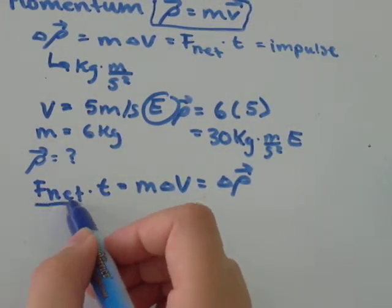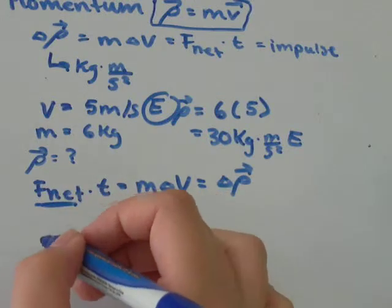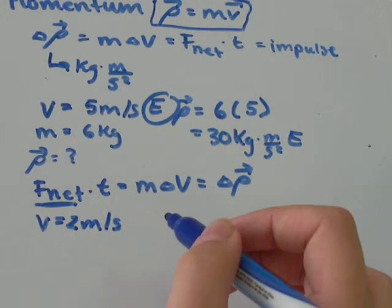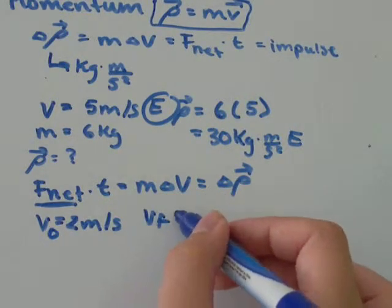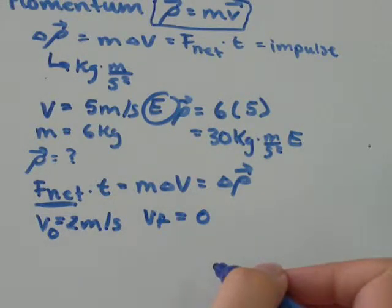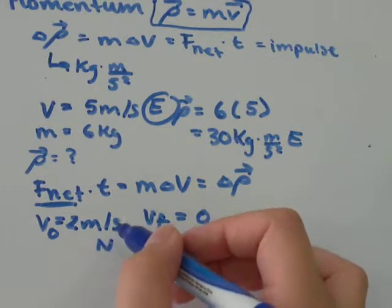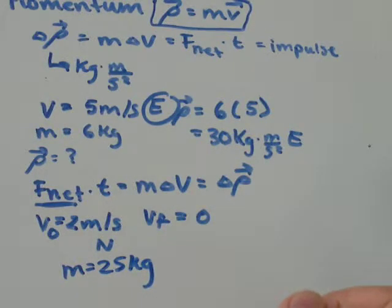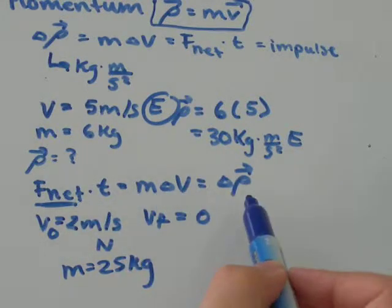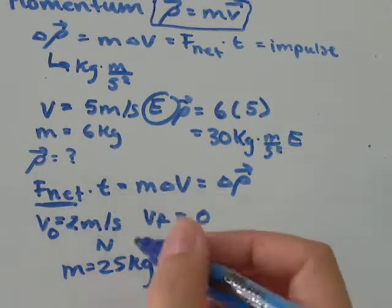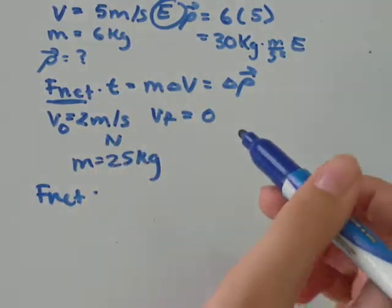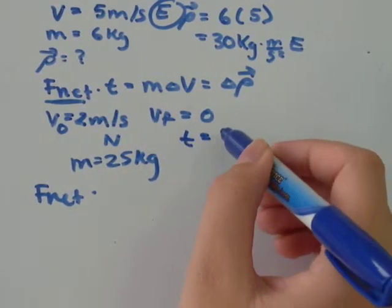I'm just going to write down all of the information we were told in the word problem. We're asked to find net force. We're told that the object's velocity is 20 meters per second at first, and then it's brought to a stop, so its final velocity would be 0 meters per second in the north direction. We also know that the mass is 25 kilograms. We're using this formula because we're finding the net force. Time is 2.8 seconds.